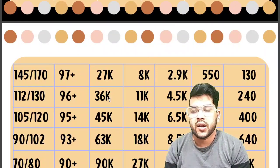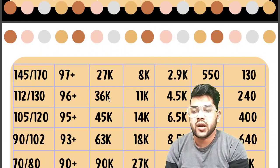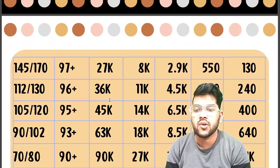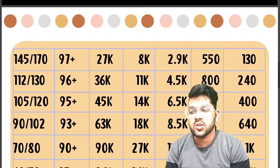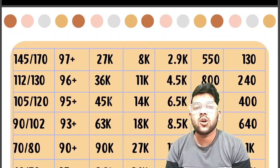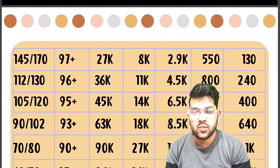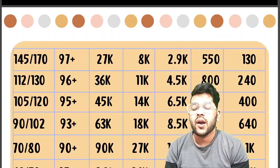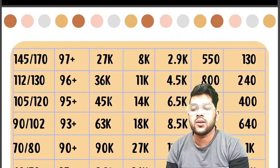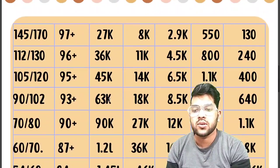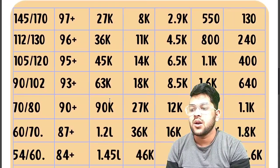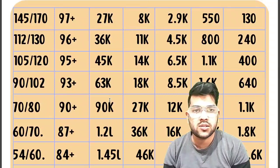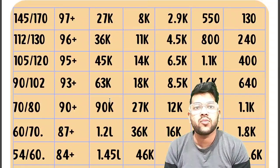For 90+ percentile, 70 marks for the first attempt and 80 for the second attempt are required. The General CRL rank will be around 90,000; other category ranks are shown on screen. For 87+ percentile, 60 and 70 marks are required and the General rank will be around 1.2 lakh, with other category ranks shown on screen.